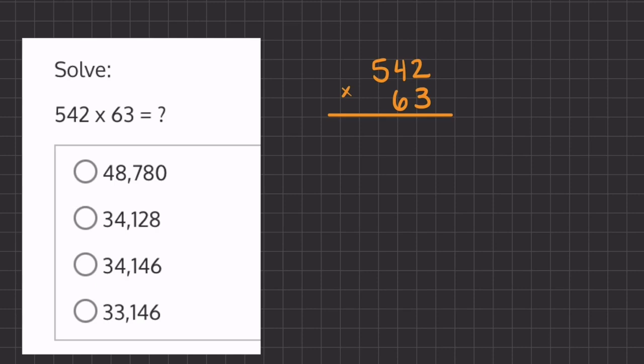All right, so in this problem we are going to solve using long multiplication and we'll do so by starting and multiplying this 3 by all the numbers above. So we have 3 times 2 which is 6. 3 times 4 which is 12. We're going to carry over the 1 and place the 2 underneath the tens place.